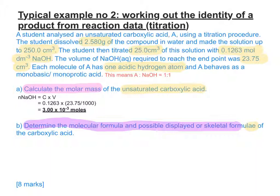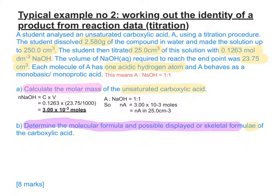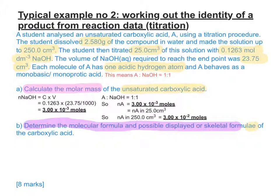We do a simple moles = concentration × volume calculation: take the moles per dm³ and multiply by the average titre of 23.75, dividing by 1000 to convert cm³, giving 3 × 10⁻³ moles of NaOH. Because of the 1:1 mole ratio, that's also the moles of acid in 25 cm³. The original solution was 250 cm³, so multiply by 10 to get 3 × 10⁻² moles of acid in total. The mass used was 2.580 g, so rearranging moles = mass ÷ Mr gives us the molar mass.